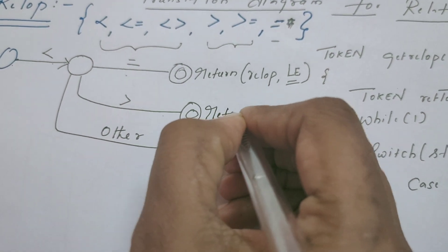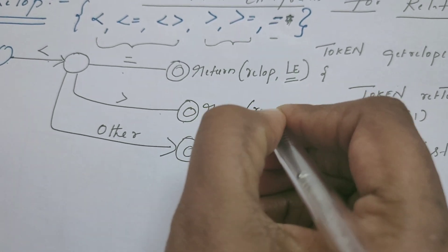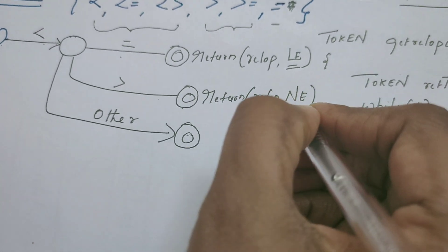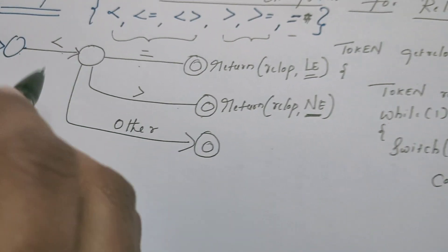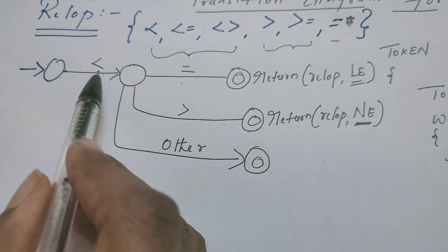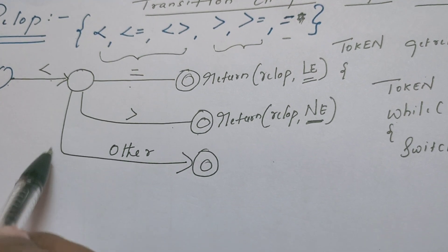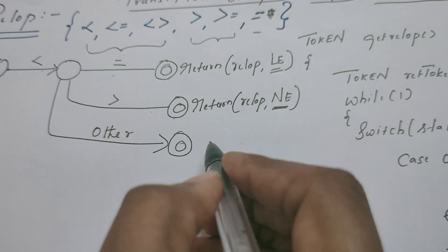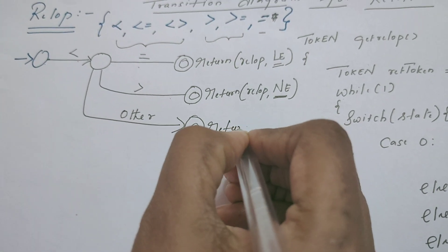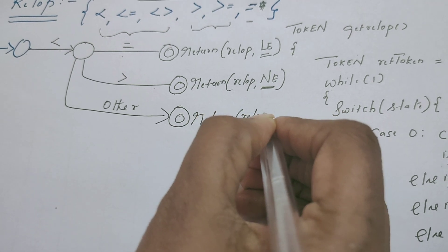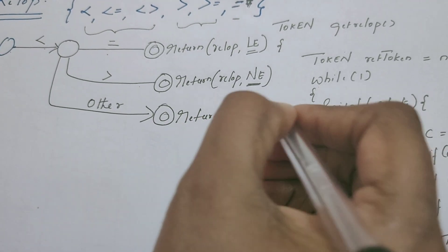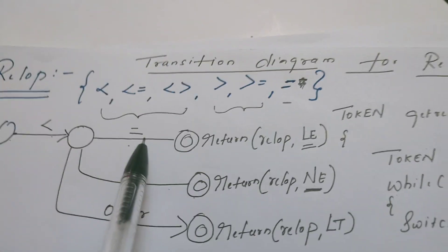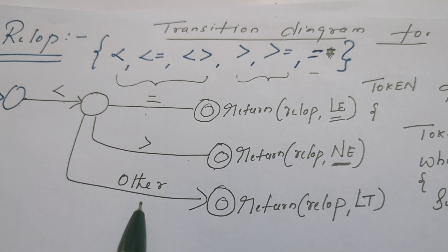If it reaches this state, it returns the token relational operator and its value is not equal to, given by the symbol NE. From the start state, if it reads the less than symbol and is further followed by some other symbol that is not any relational operator, the transition diagram should return the operator type relational operator and the value is less than symbol.